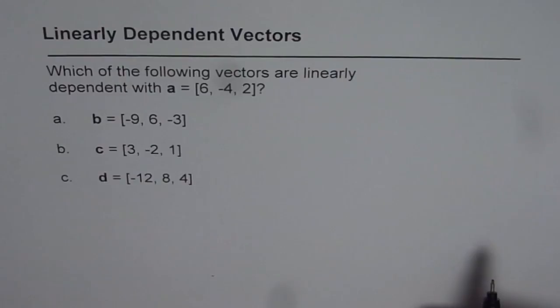Now, when we are saying linearly dependent, then what are we trying to say? How can we find that the two vectors are linearly dependent? Let us take the vectors A and B. If I have to prove that vectors A and B are linearly dependent, what should I prove?